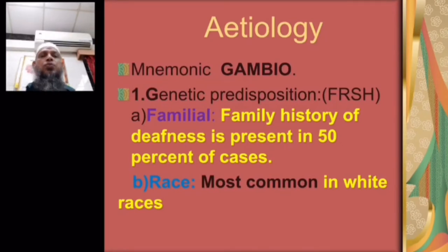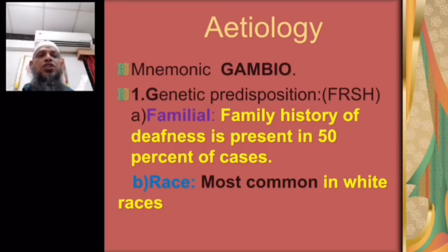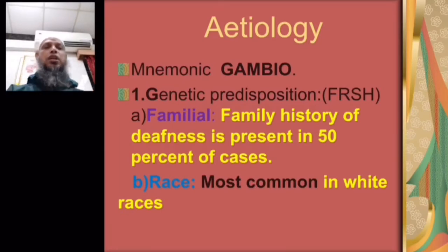The etiology of otosclerosis: number one is genetic predisposition, number two is autoimmune disease, number three is measles, number four is biochemical changes. The mnemonic is GAMBIO — G for genetic predisposition, A for autoimmune disease and age, M for measles, and BIO for biochemistry.